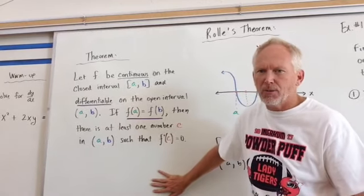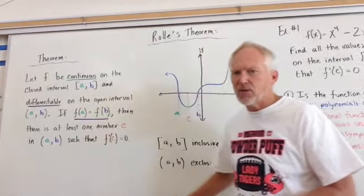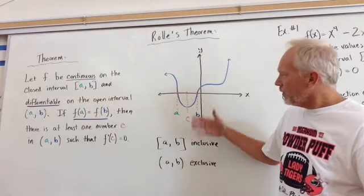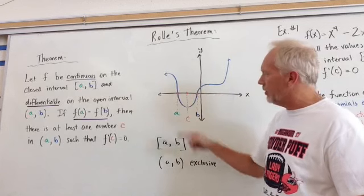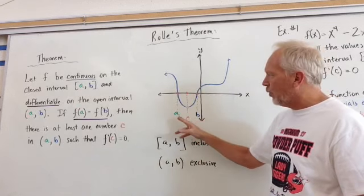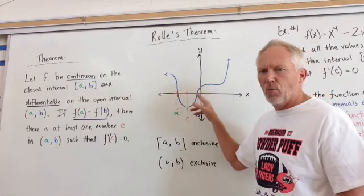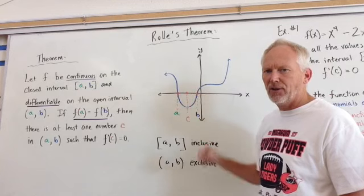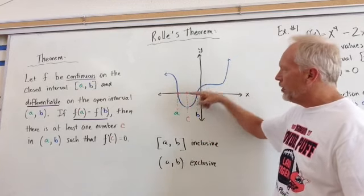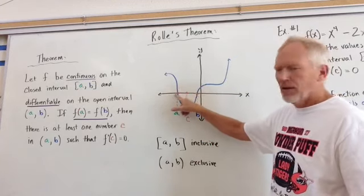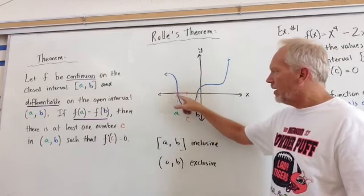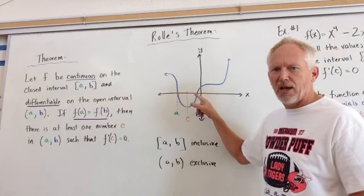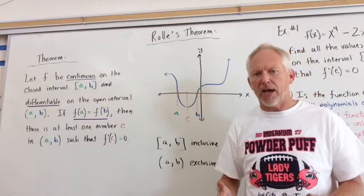All right. So now that we know some of the background, let's take a look at a picture. So here we have a graph, and it's a function, and it's continuous. And what we're looking for is two values where the Ys are exactly the same. So on this graph, we can see that here they both, at A and B, they both have the same exact Y value because they cross the X axis.